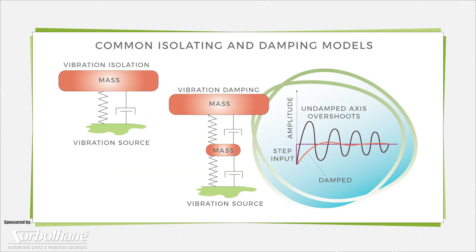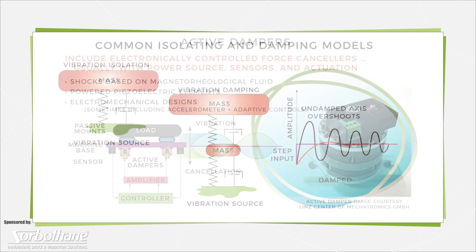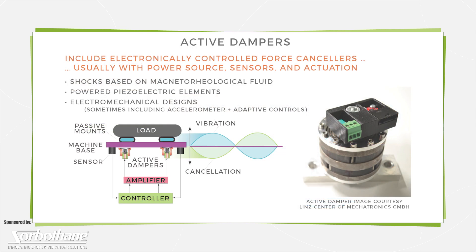In contrast with isolators, passive dampers such as material slabs and mechanical linkages change the kinetic energy of vibration into heat. Passive damping usually employs viscous fluids, viscoelastic materials, piezo elements, or simple magnetics.